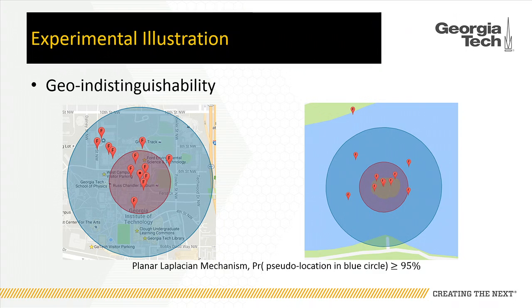You might think you could add more noise for the second scenario when the user is in isolated locations. But unfortunately, most existing mechanisms consider a uniform noise level everywhere. This means when you add more noise for the isolated case, you also introduce unnecessarily excessive noise for the urban case, which actually hurts utility.